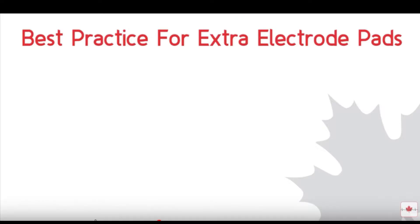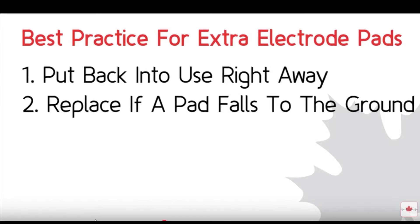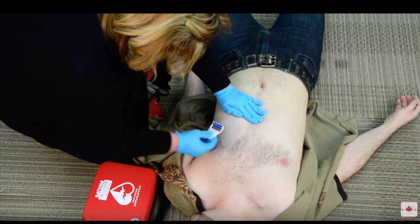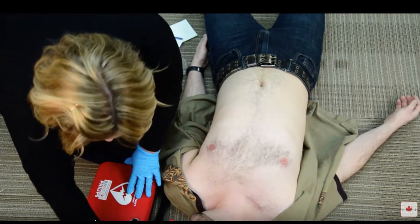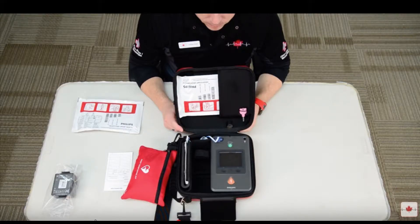The following points outline why having an extra set of electrode pads is considered best practice in terms of rescue readiness: if the AED is ever used, you can put it back into service right away; if during a rescue one of the electrode pads falls to the ground, you can replace it; and if the person has a hairy chest and you need to shave it, this can be done using the first set of electrode pads.